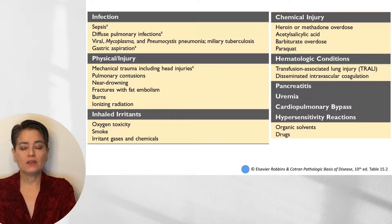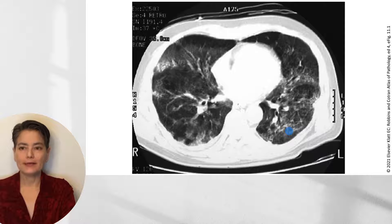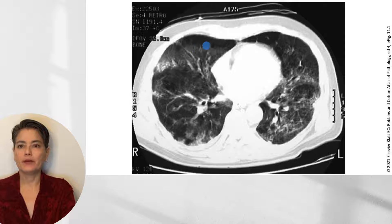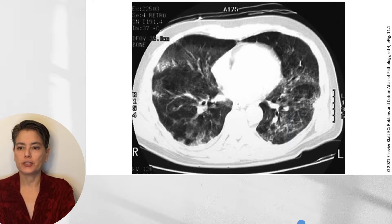On radiology with acute respiratory distress syndrome, we see bilateral opacities. The picture is quite heterogeneous — some areas have reasonable oxygenation without much fluid buildup, while other areas are very patchy and consolidated. There is a patchiness to this diffuse picture.